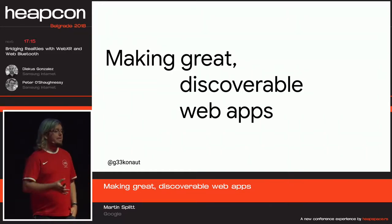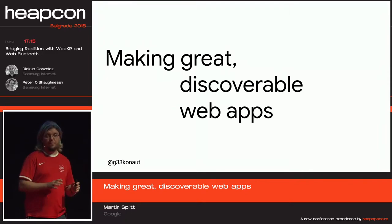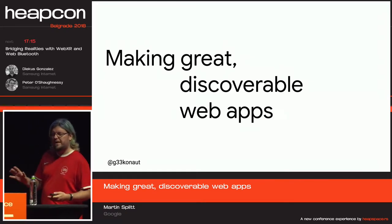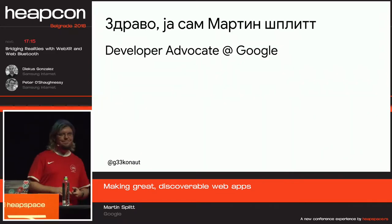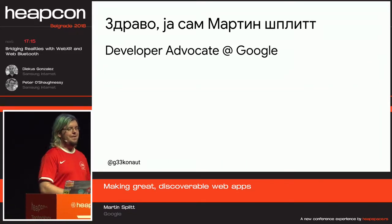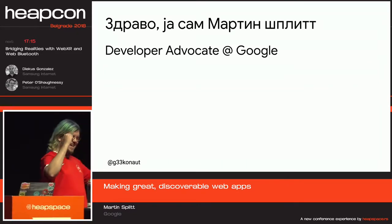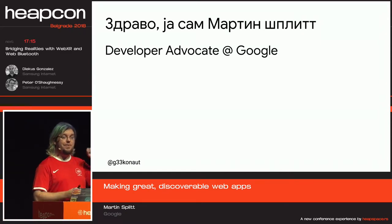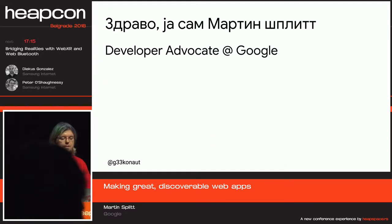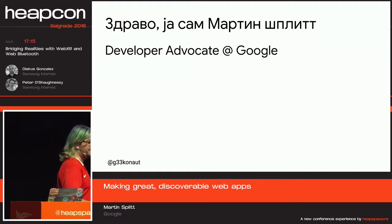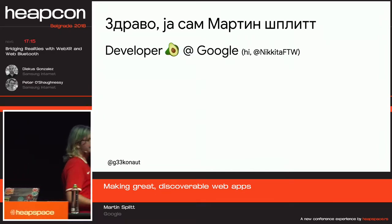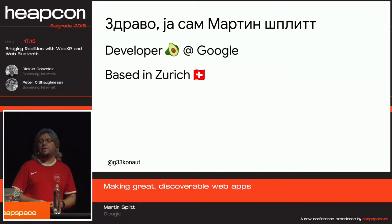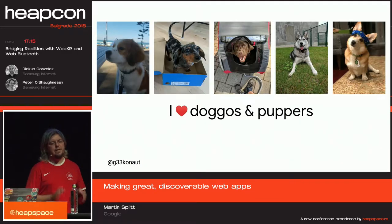I'm really excited to have you all here and be talking about making great discoverable web apps, because it's a topic that we don't often talk about and we kind of tend to forget a little bit, but I think it's important. Now, who am I? I'm a developer advocate at Google — or as some people say, a developer avocado at Google. I'm based in Zurich in Switzerland, one of our larger engineering offices around the world. And I really, really enjoy doggos and puppers.